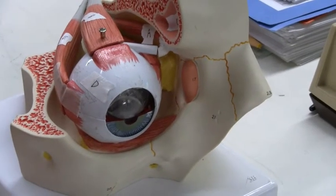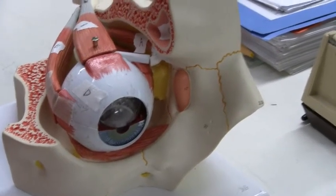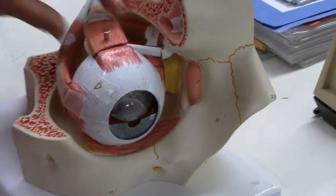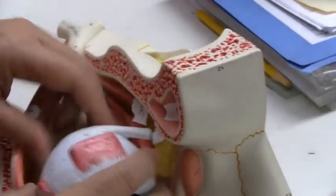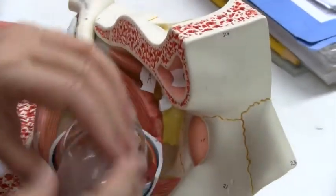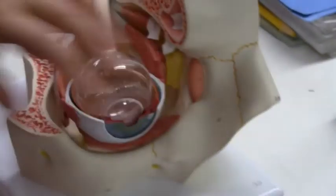And photoreceptors? That's part of the retina. Okay, so let's look inside here. So the light coming in is going to be bent first by the cornea.